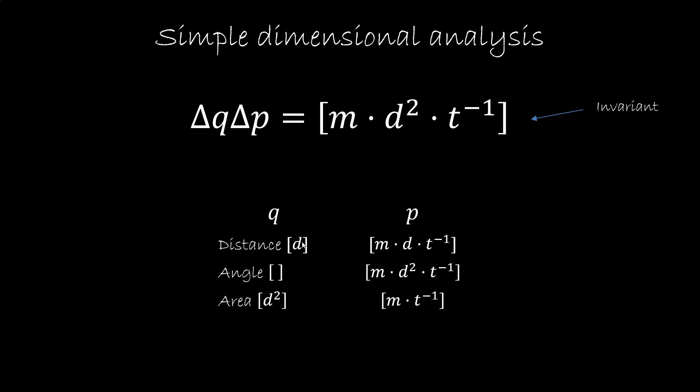For example, if q is a distance, then p is mass distance over time, mass times velocity. If q is an angle, then p is mass distance squared over time, angular momentum. If q is area, for example the area swept by a planet during its motion, then p is mass over time. So it should be clear that p cannot always be mass times velocity, but things get even more tricky, so let's look at that in more detail.